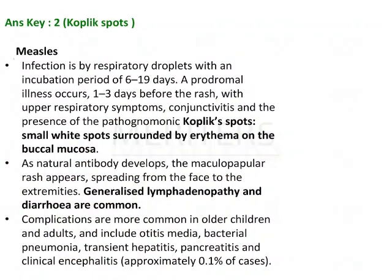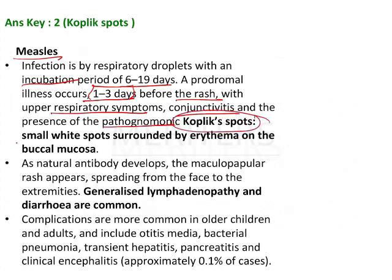To quickly walk through the explanation: in measles, the incubation period is 6 to 19 days; the prodromal phase can be 2 to 5 days, sometimes given as 1 to 3 days as it is variable. This phase involves respiratory symptoms, skin rashes, conjunctivitis, and Koplik's spots, which are pathognomonic for this disease. Koplik's spots are small white or grayish-white spots surrounded by erythema on the buccal mucosa.